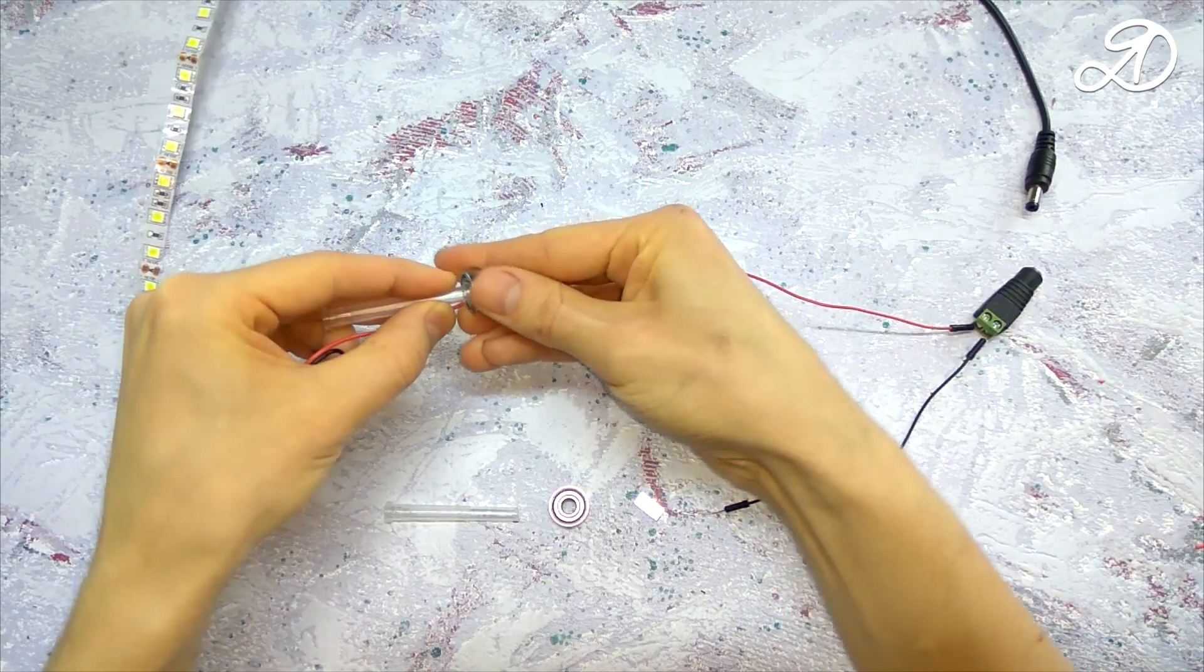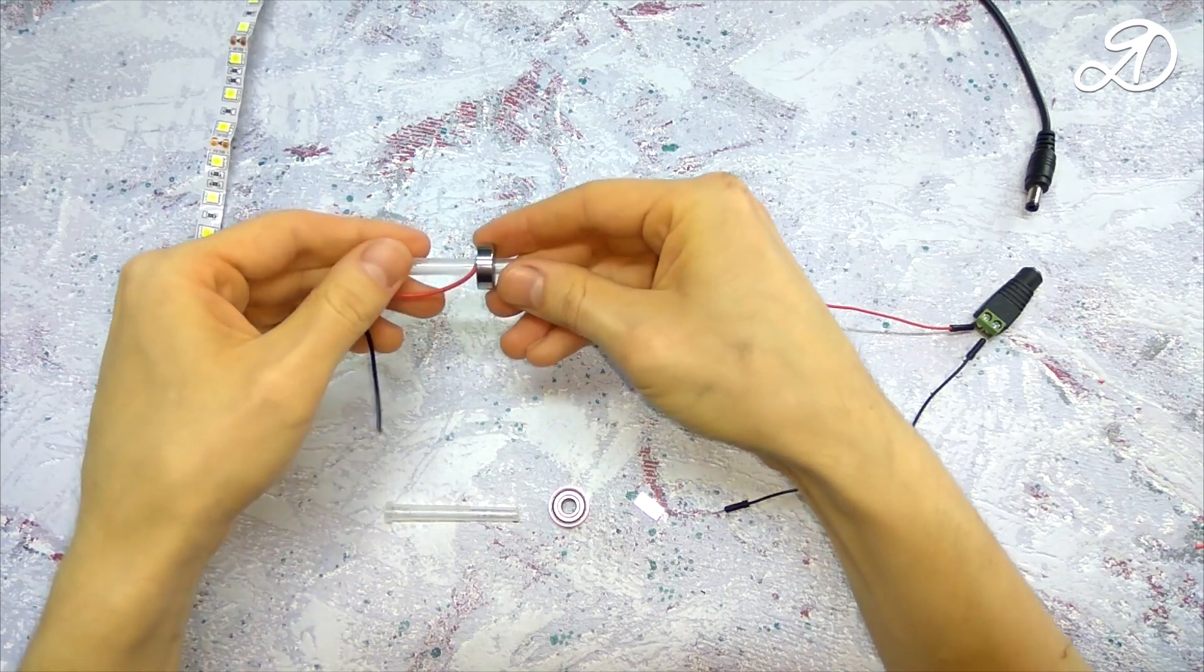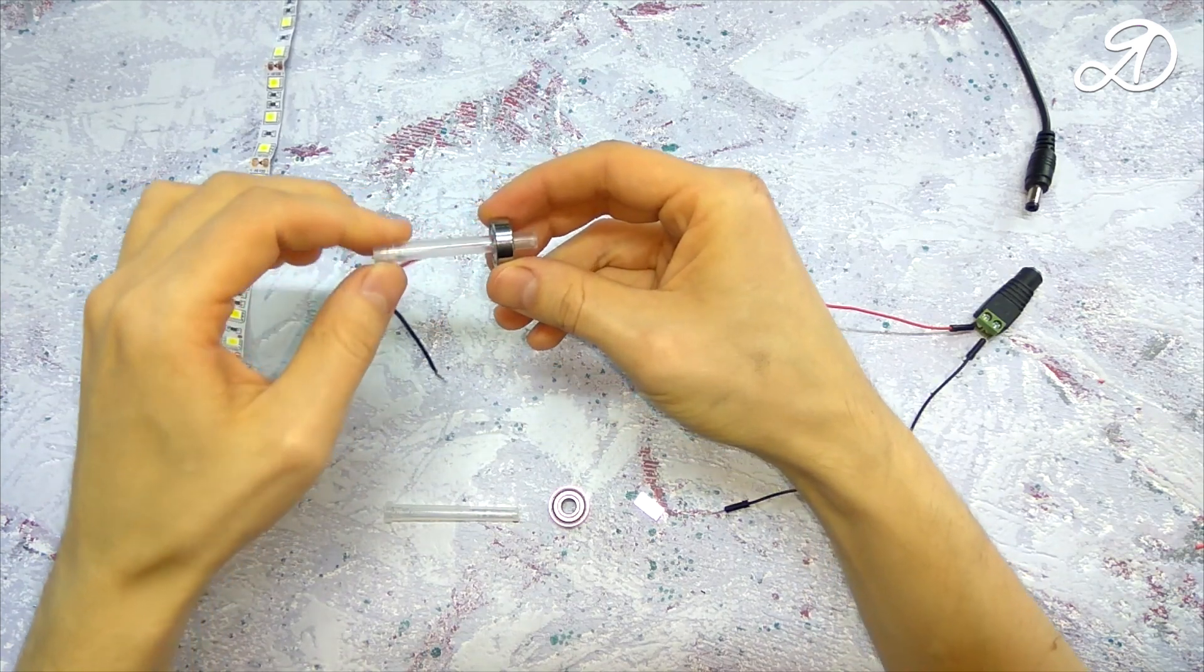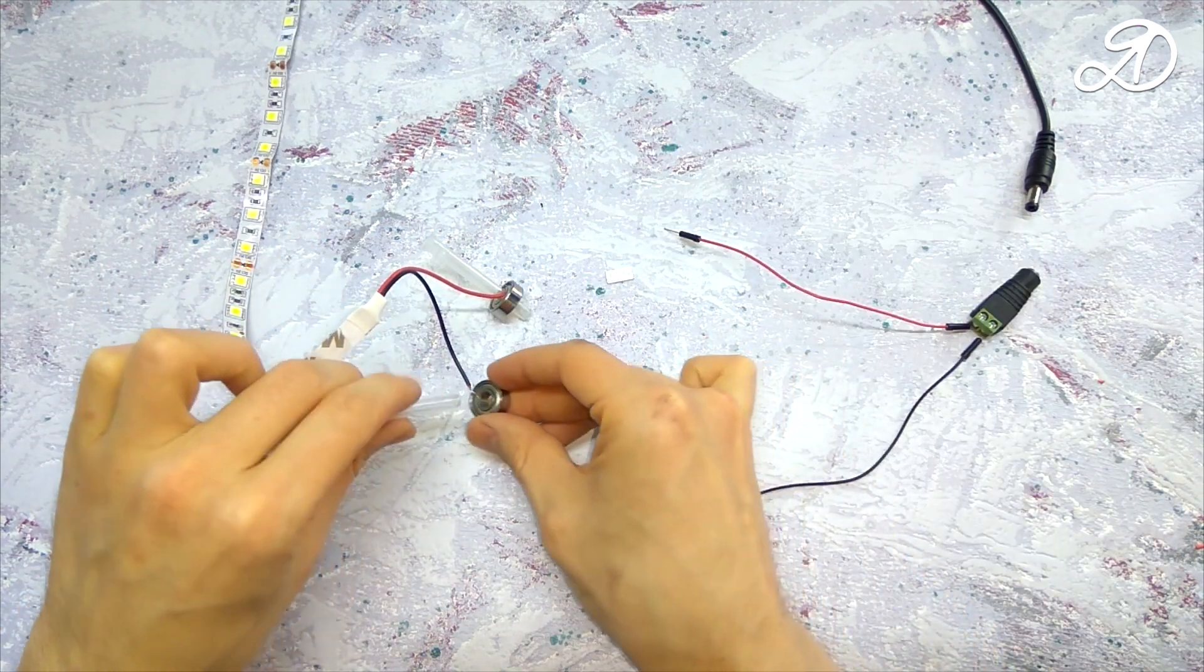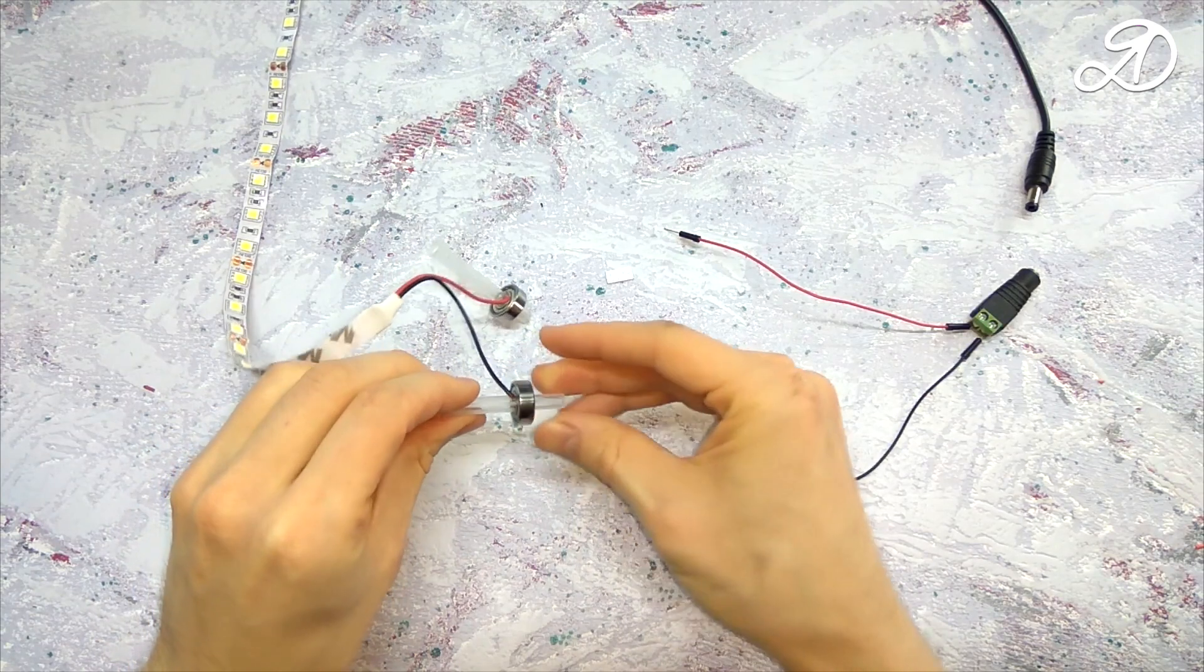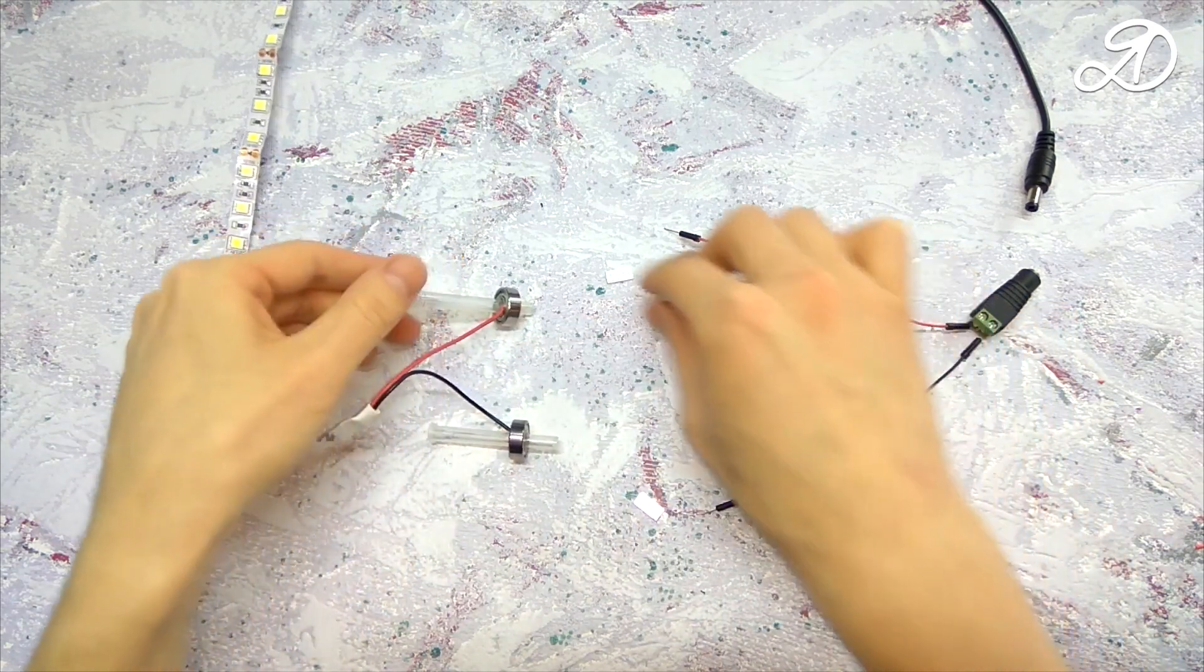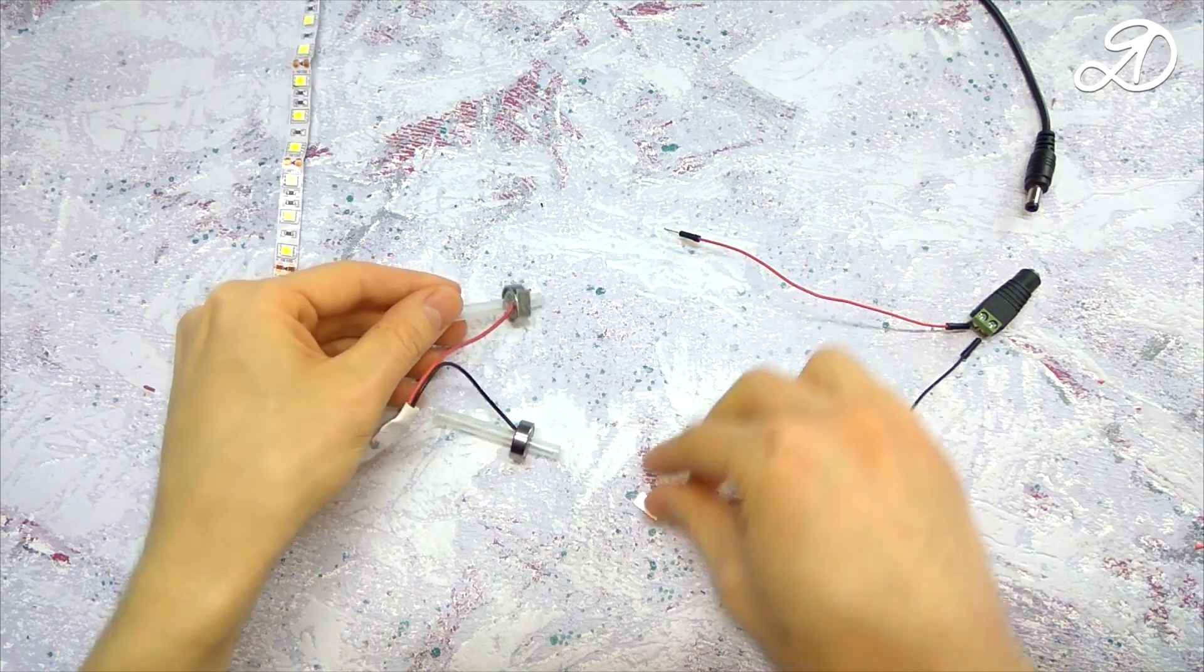Press the wire tape to the inner ring of the bearing with the cap. The power wires are attached to the outer rings of the bearings with magnets.